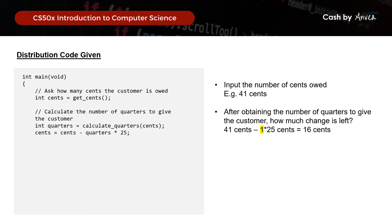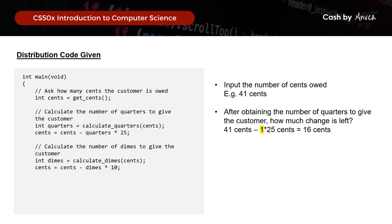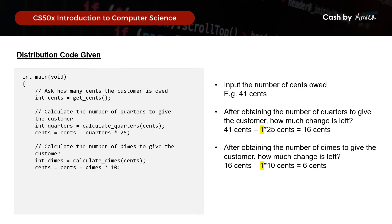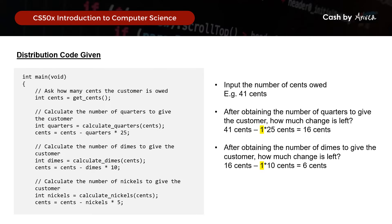Next, we calculate the number of dimes to give. We declare an integer called dimes and use calculate_dimes to determine how many dimes to issue. After issuing dimes, the balance is 16 cents minus 1 dime times 10 cents, which equals 6 cents left. Since no more dimes can be issued, we move on and do the same for nickels.